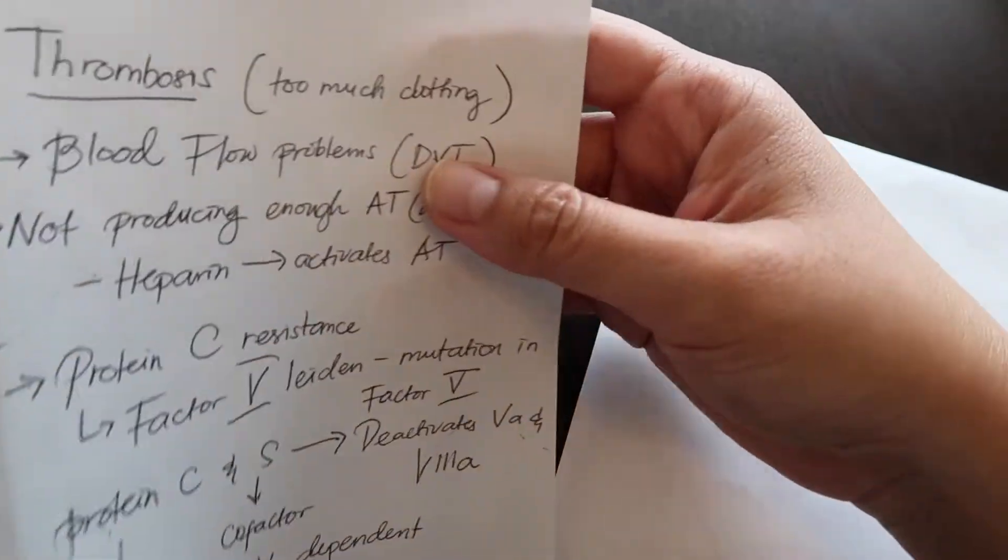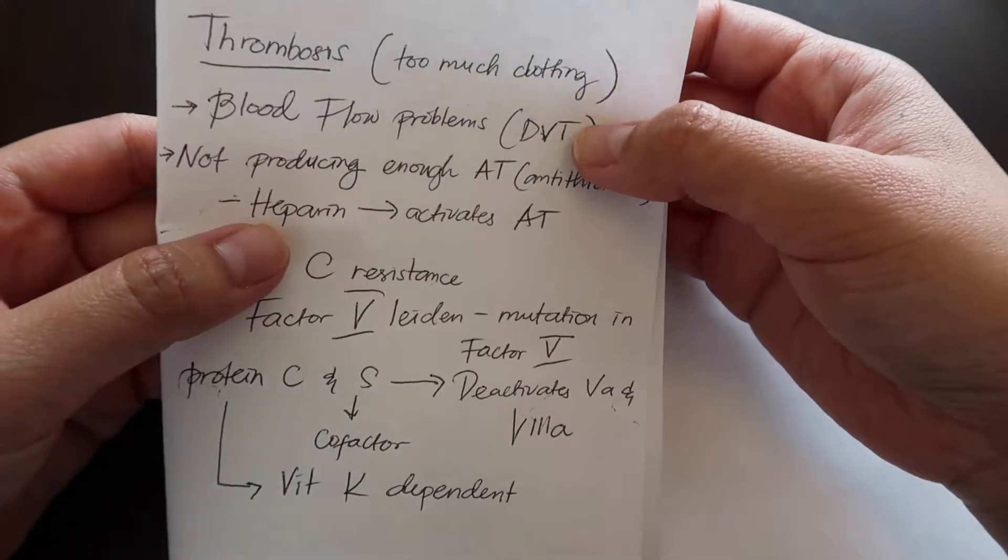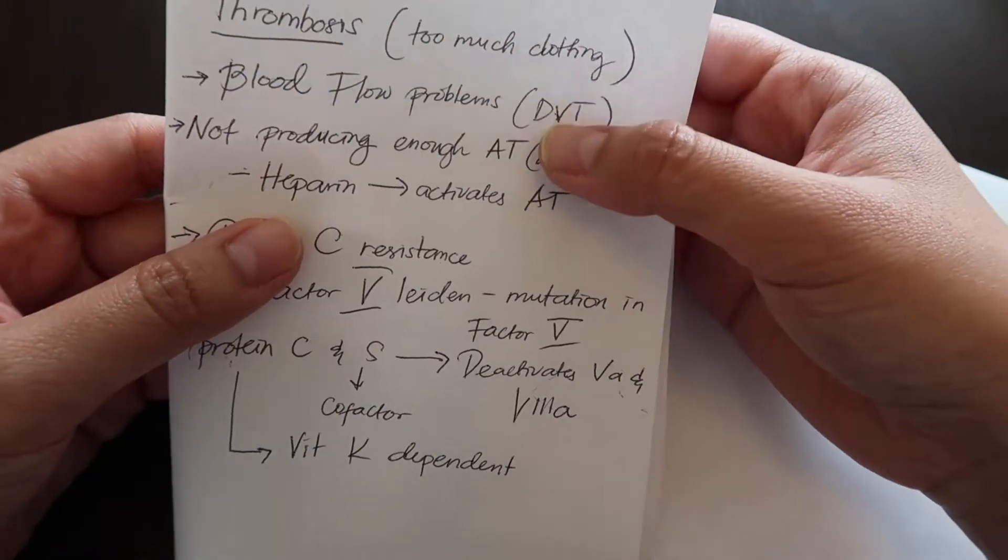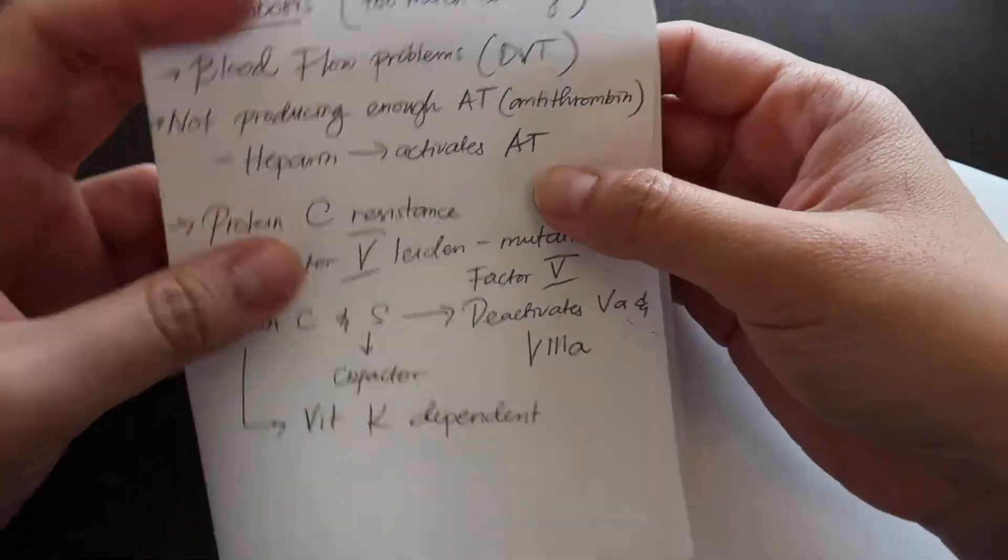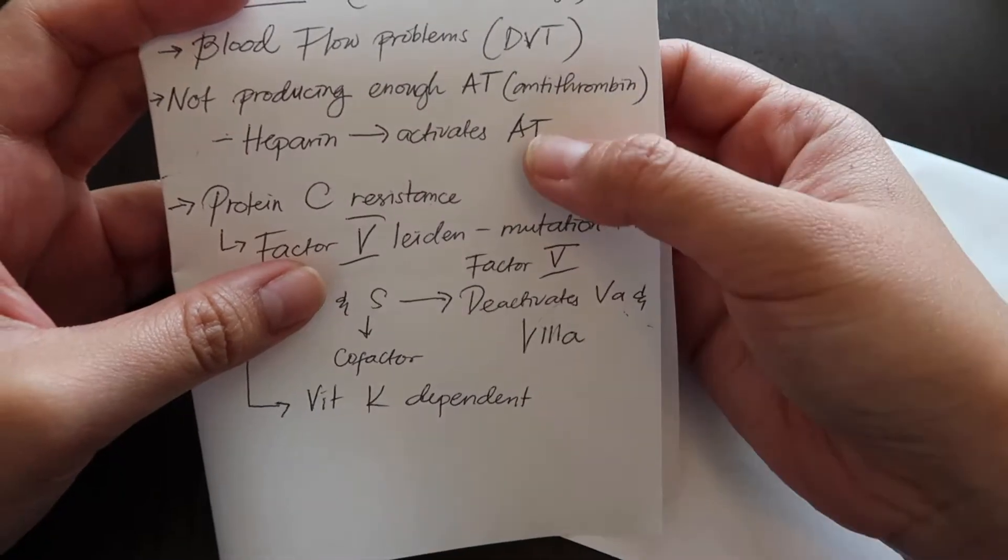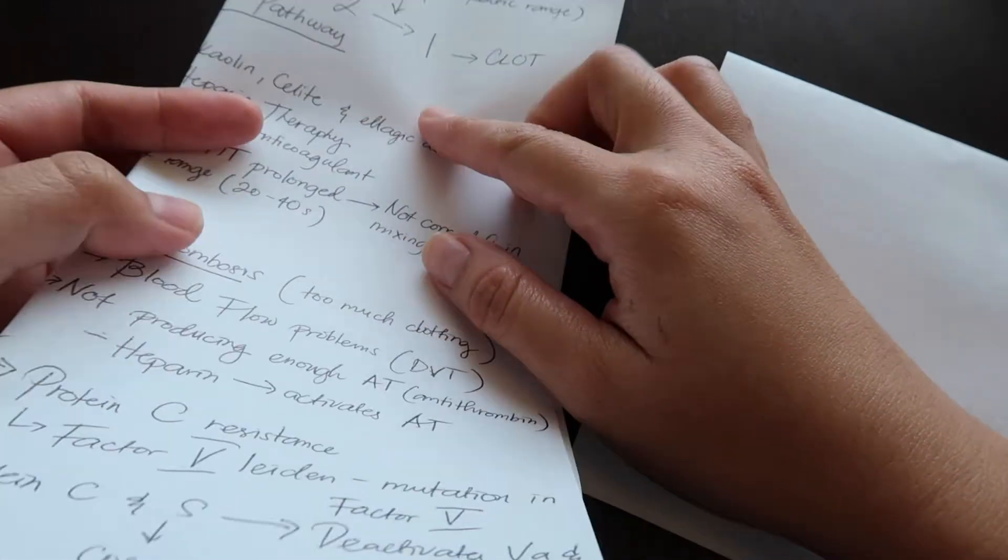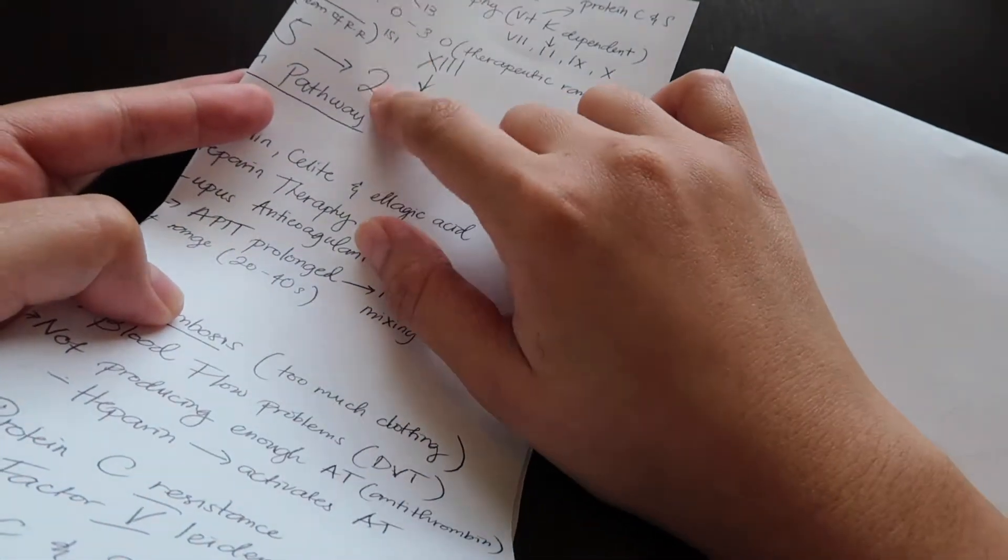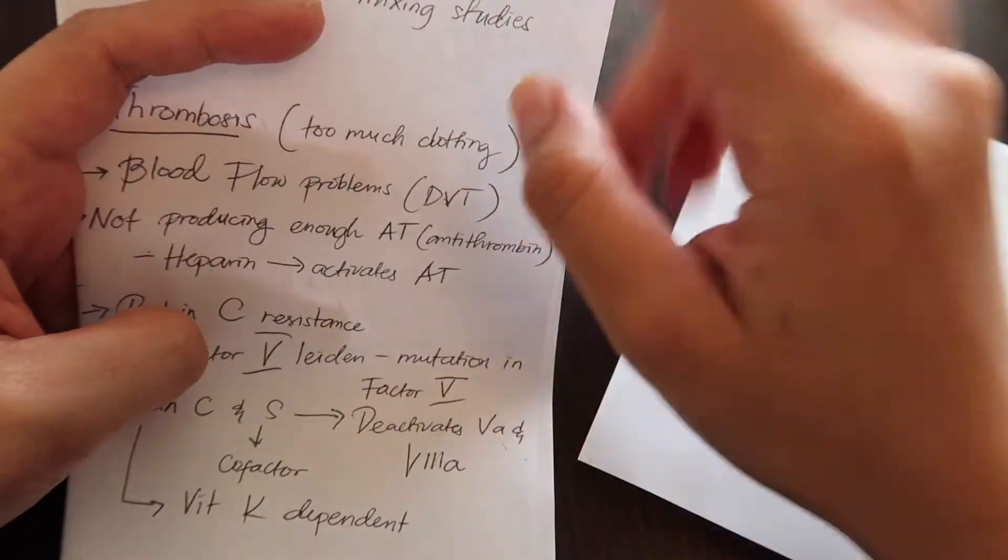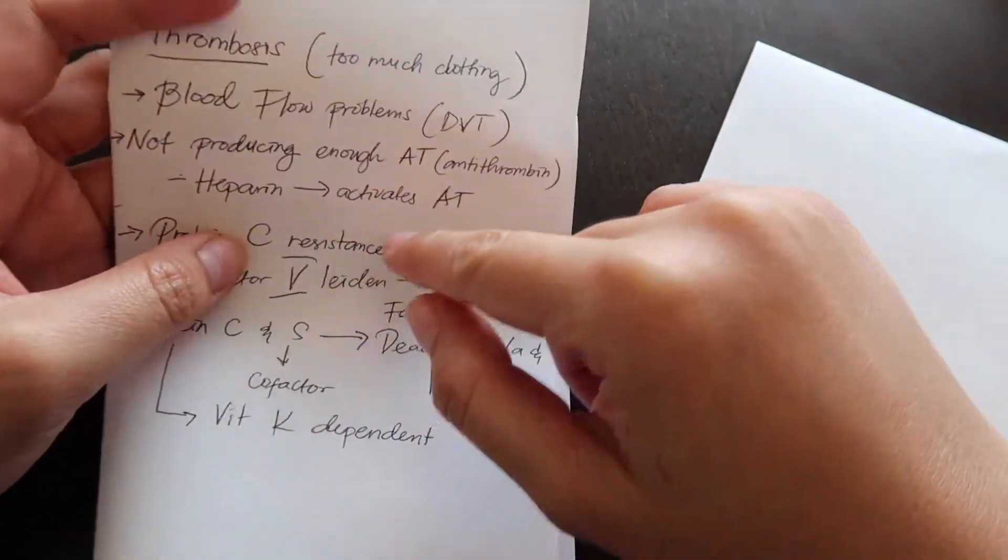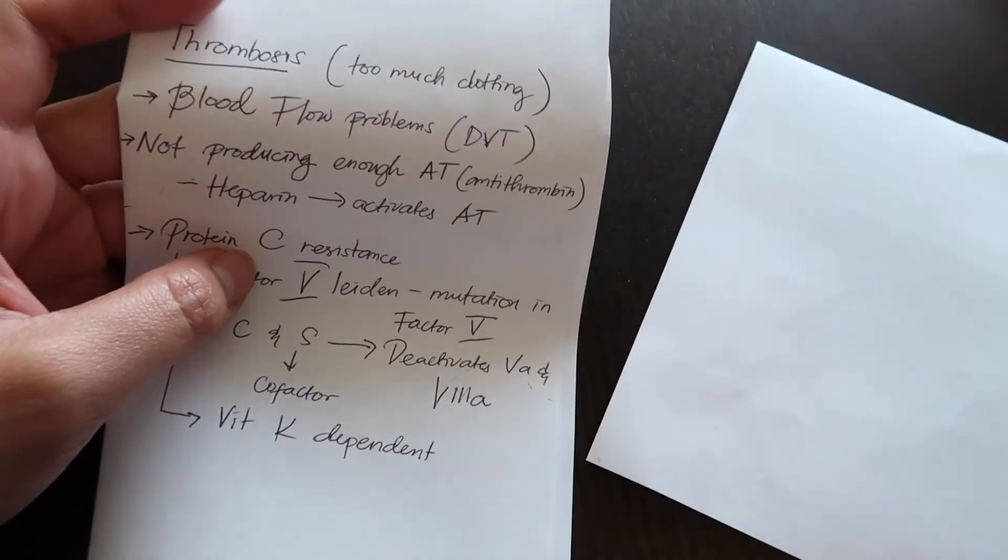Thrombosis now. We're going to move on to too much clotting. Some people just have blood flow problems so they get huge clots because they're not moving too much. You get deep vein thrombosis, and you can also have this issue if you're not producing enough antithrombin. Antithrombin is something that dissolves your thrombin. Factor 2 is also known as thrombin. If you don't have something that can stop the production of factor 2, you will have problems. You will have clotting problems. There's going to be too much of it and it's going to be thrombosis.